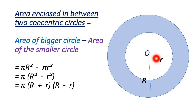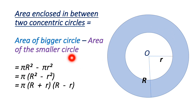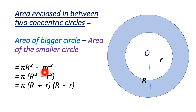So πr² is the area of the smaller circle, and it is subtracted from the area of the bigger circle to get the area of the enclosed section. We can write this as π(R² - r²), or equivalently π(R + r)(R - r). These are the formulas we can use.